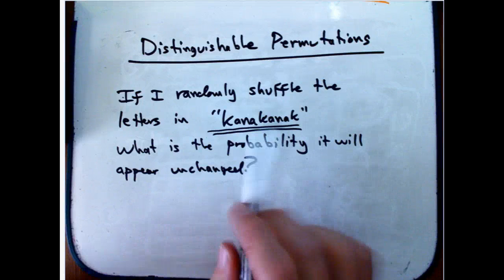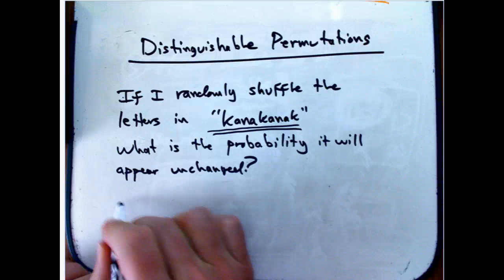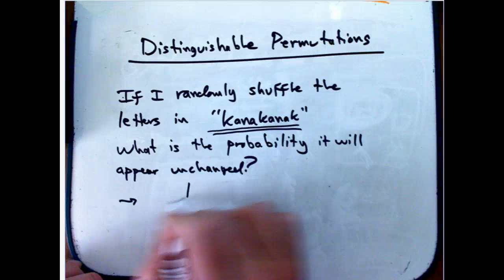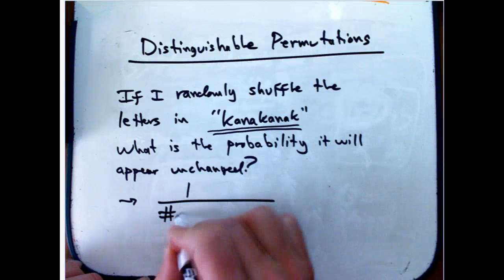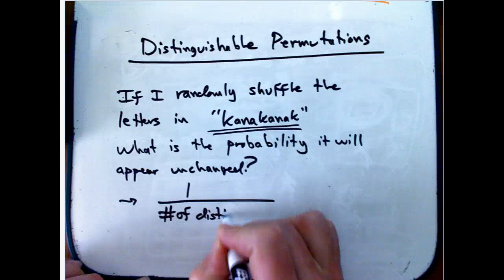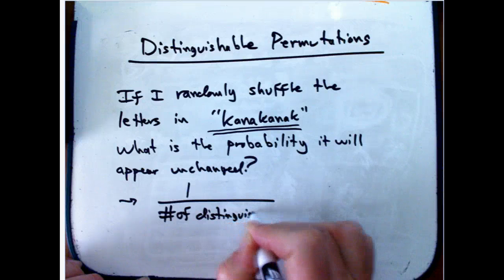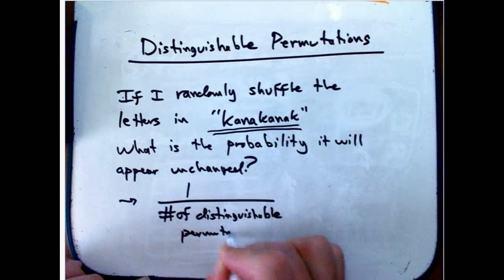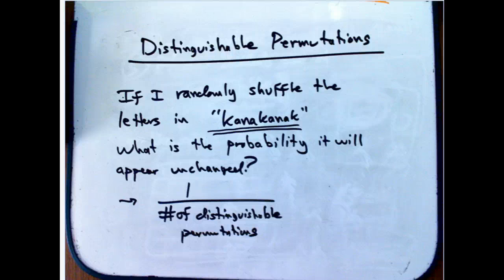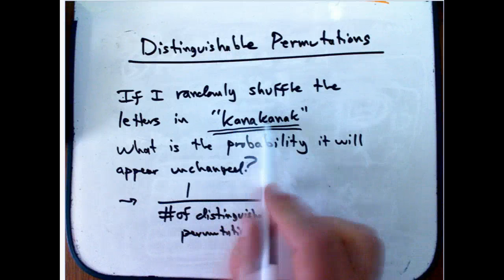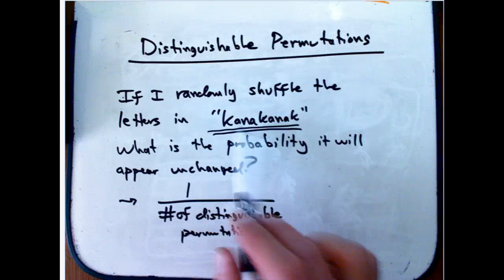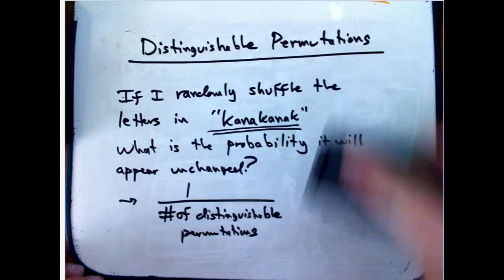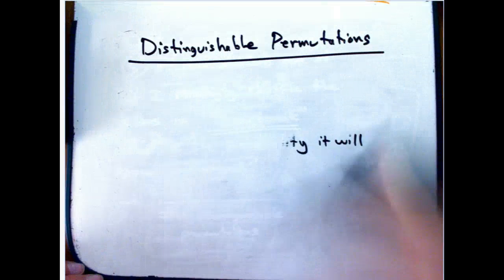So I'd like to know how many distinguishable permutations. So there's one Kanakanak out of all the different reshufflings over the number of truly distinguishable permutations of that word. And distinguishable meaning, if I switch the two K's, or if I shuffle any of the A's or the N's, sorry, there's three K's, or if I shuffle any of the A's together, then it won't look different.